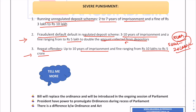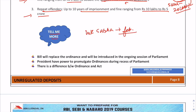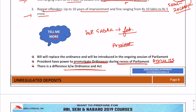The Lok Sabha passed this bill in February, but it could not be passed by the Rajya Sabha. Since Parliament was not in session, a ban ordinance was issued by the President under Article 123 of the Constitution, which gives the President the power to promulgate ordinances during the recess of Parliament. An act is a law passed by both houses — Lok Sabha and Rajya Sabha — with the President's assent, whereas an ordinance is a law issued without discussion in one or both houses of Parliament.